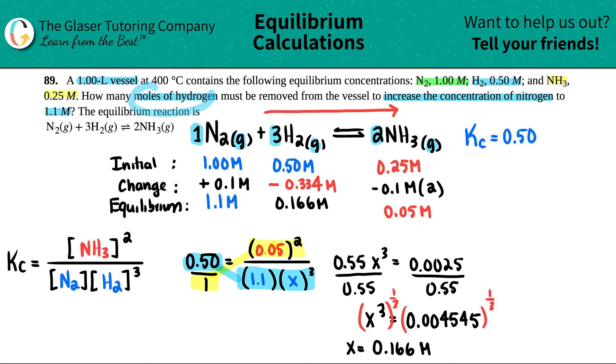And now the question was asking for how many moles of hydrogen must be removed? Removed means negative. So for H2, we have 0.334 molarity removed, but they just wanted to know it in terms of moles. And remember, molarity equals moles divided by liters. That's the general formula. And if we want to solve for the moles, I could say that moles equals molarity times liters. So here's the molarity. They told us that it was in a one liter vessel. So the moles would be the 0.334 times one liter. So it's essentially the same. The molarity equals the moles in this case. So we have 0.334 moles of H2 removed.